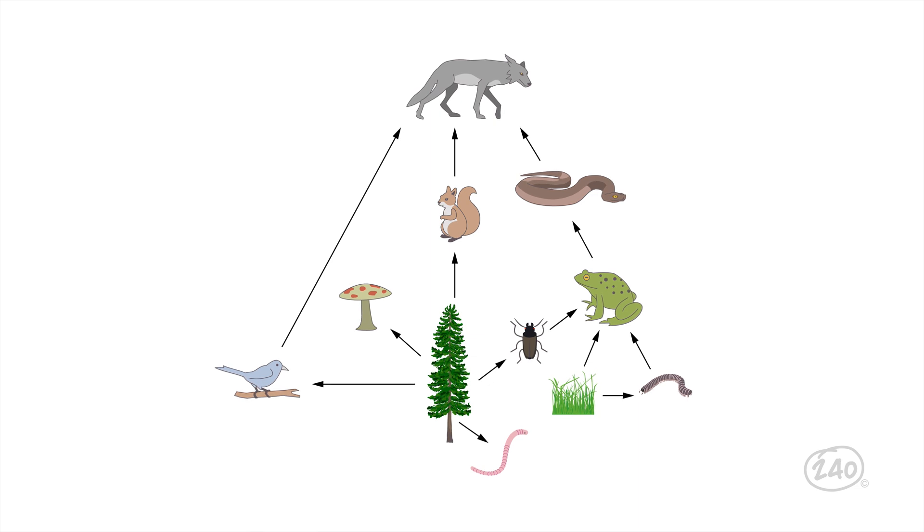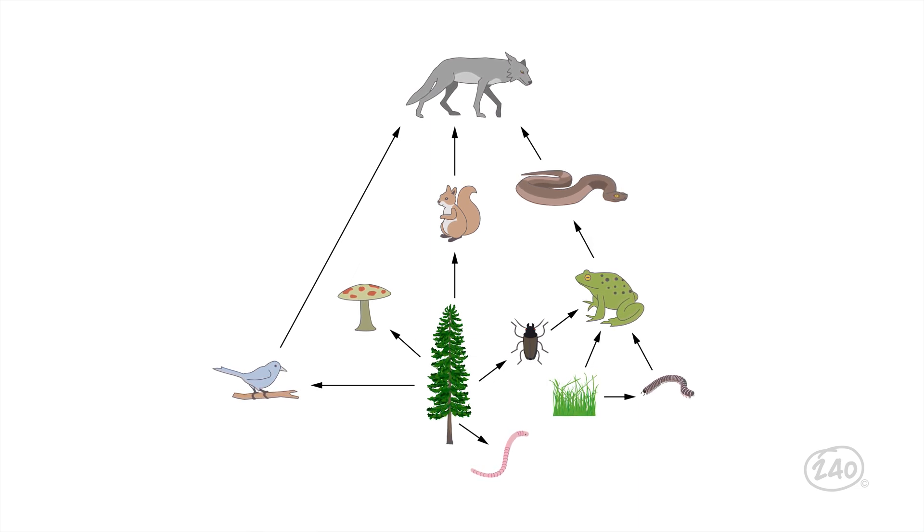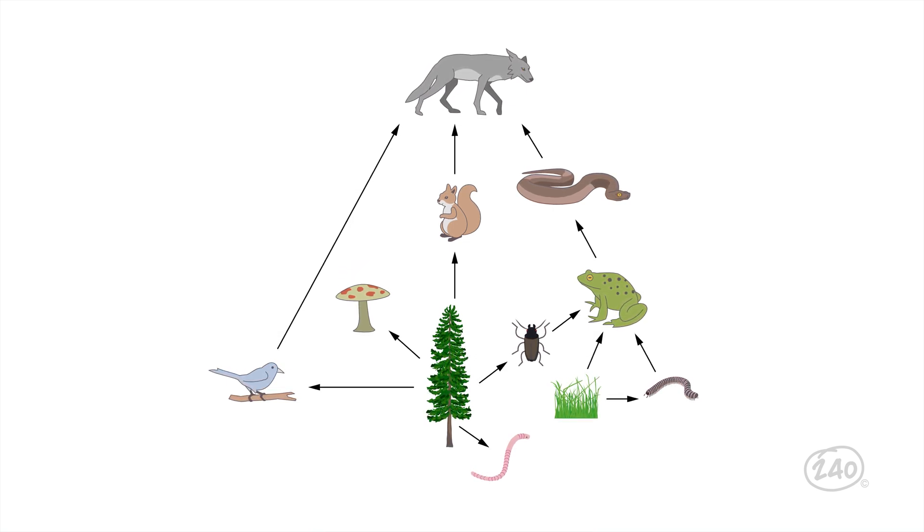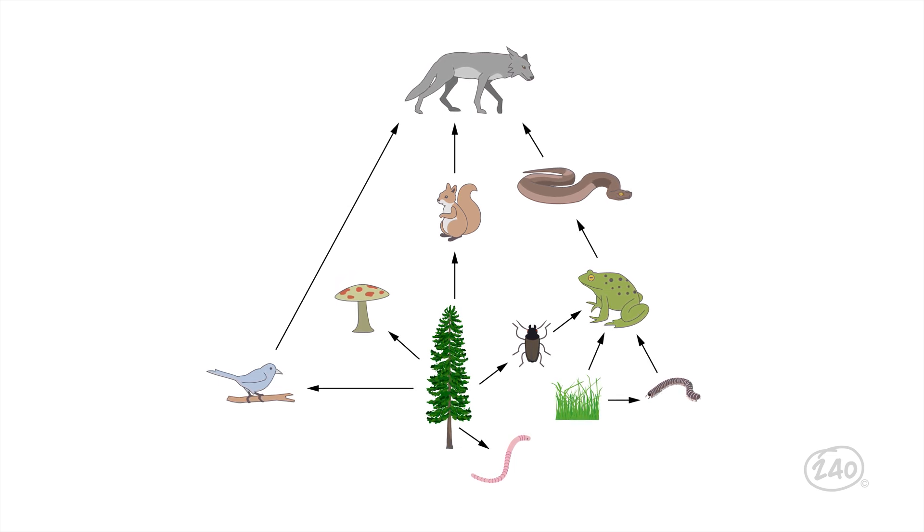In this food web, if the frog population died out, there would be no food for the snake population, and it would also die out. Then the wolf population would have to depend more on the squirrels and birds, which might get overhunted. On the other hand, the bugs and grass the frog used to eat might have an increase in population.